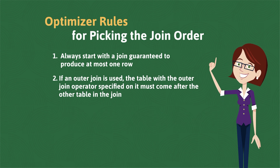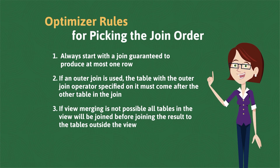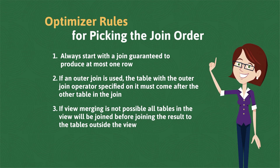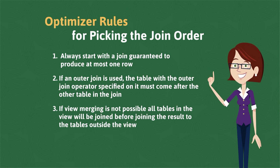The final rule applies to SQL statements that access database views. Typically, the optimizer attempts to do view merging, where the definition of the view is inserted into the rest of the SQL statement and the entire expanded statement is optimized as a whole. However, there are a small number of cases where view merging isn't possible, and in these cases all of the tables in the view must be joined together first before that resulting data set is then joined to the subsequent tables that were outside the view in that particular query.